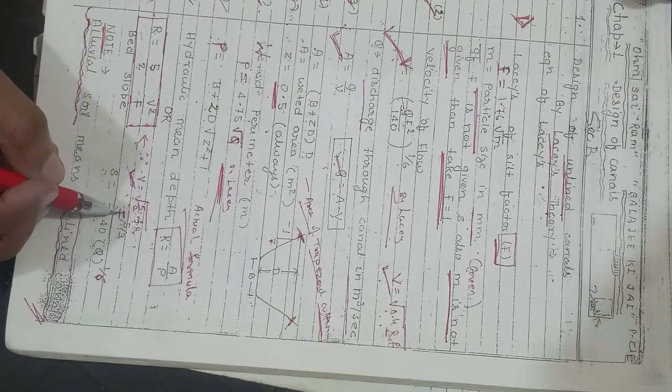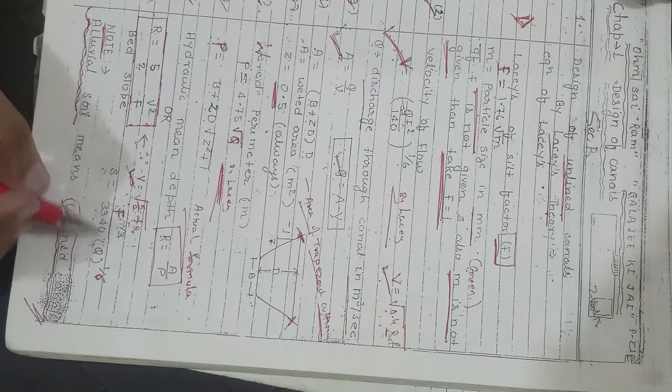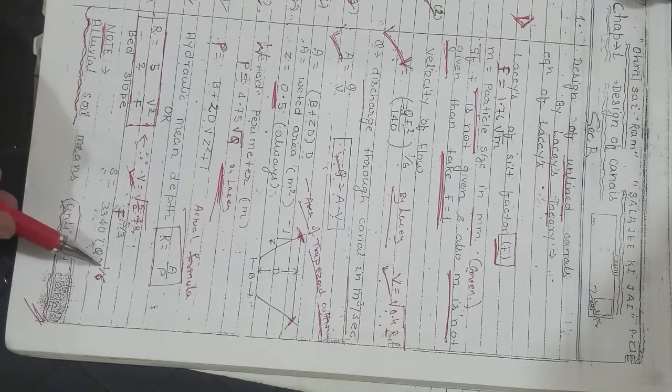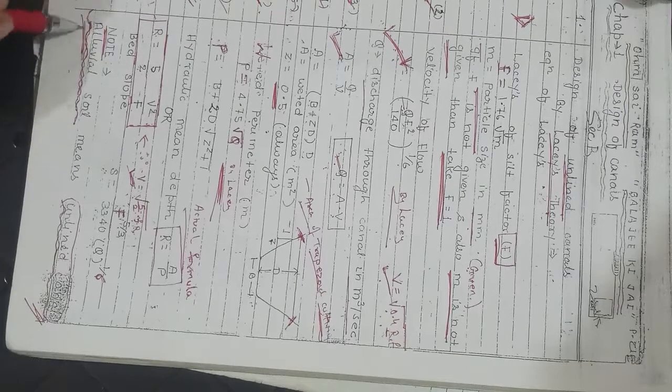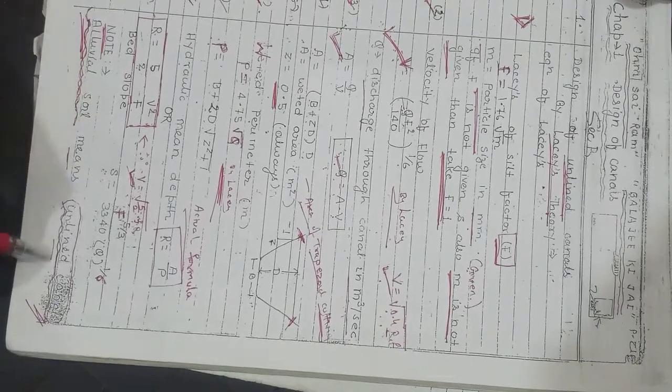The formula is S = F^(5/3) / [3340 × Q^(1/6)]. Note: alluvial soil means unlined canal.